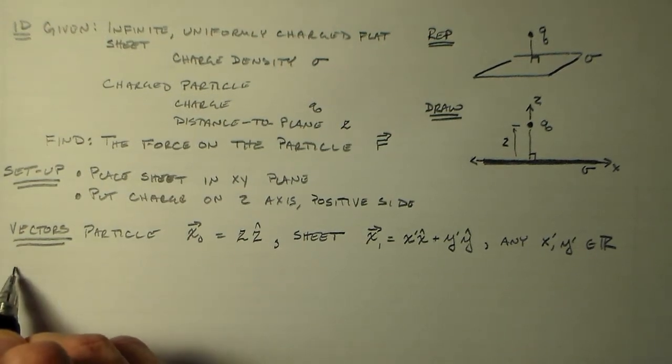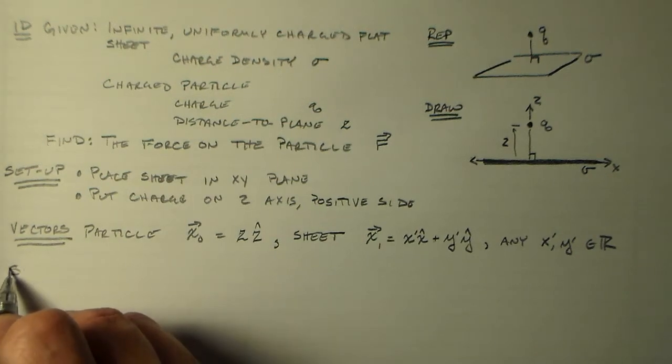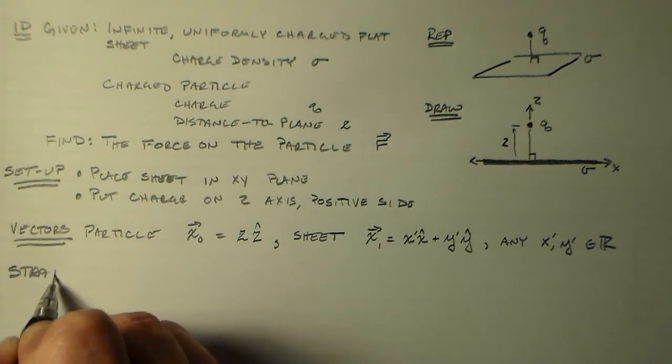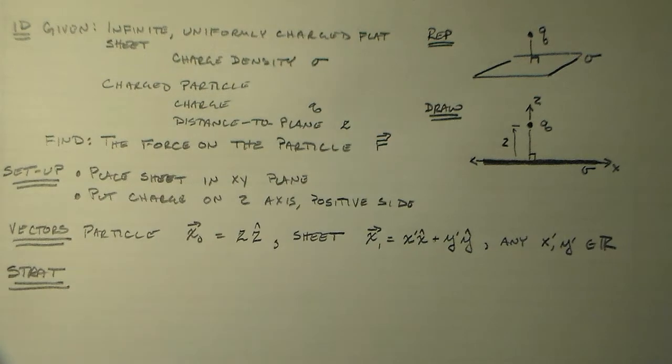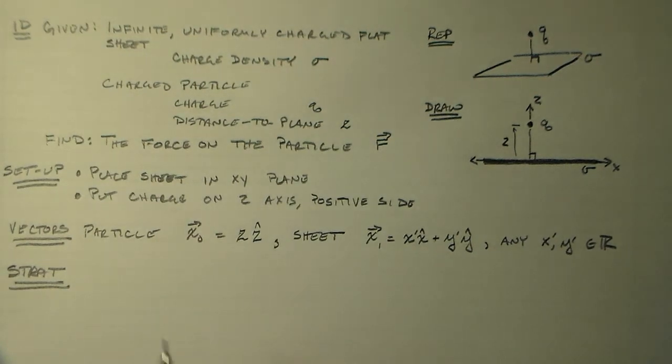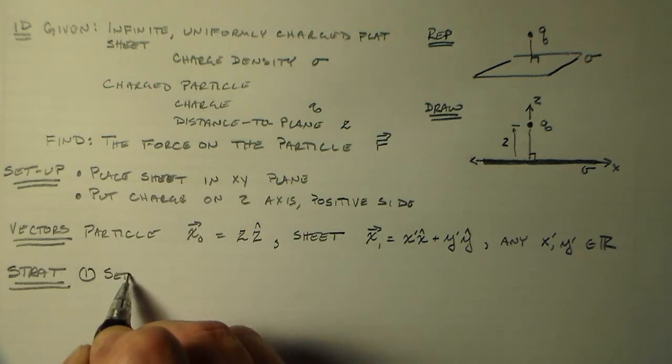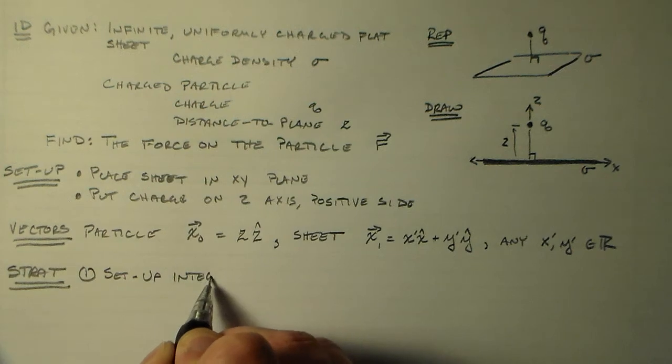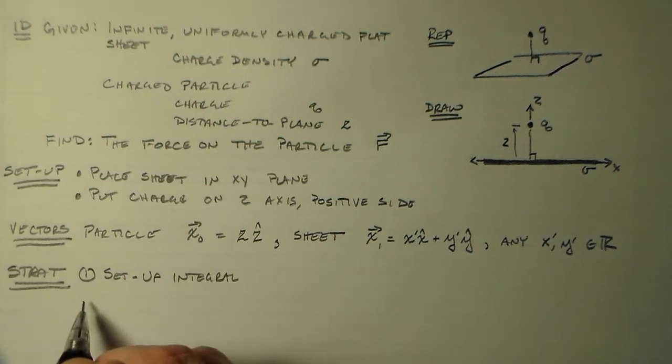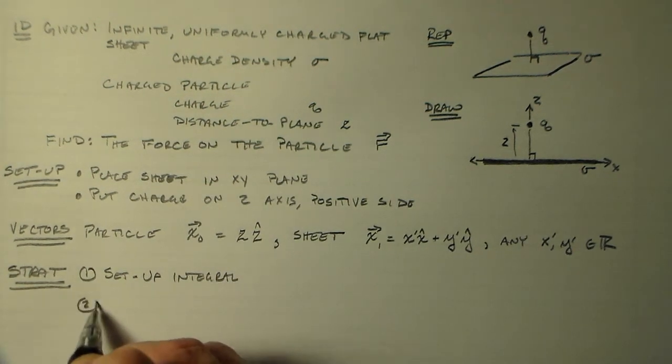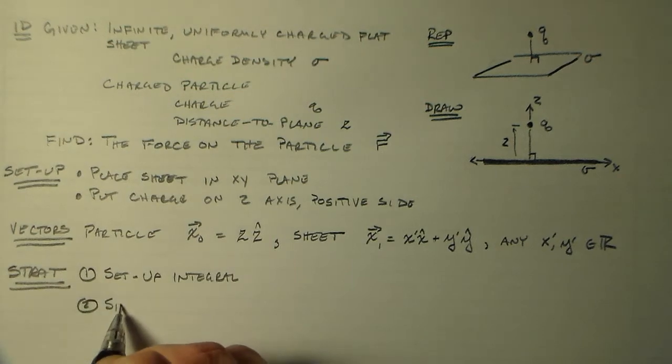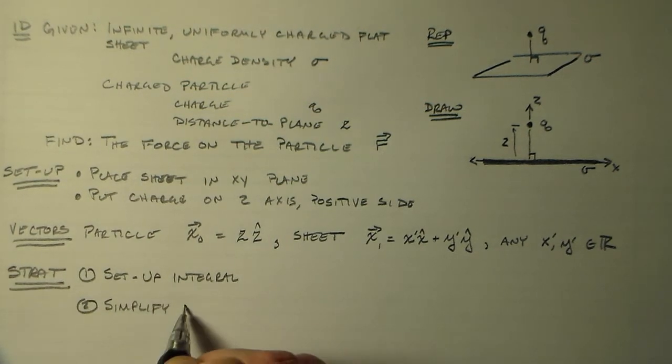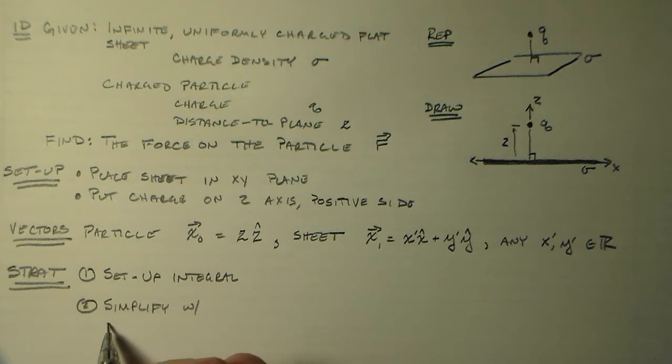So that's what we've got for our vectors. Then we need a strategy, right? How are we going to cope? Now that we know where everything is, how are we going to actually solve the problem? First thing we want to do is set up the integral. That's always good for business. Two, we want to simplify. Simplify it with symmetry. We'll use some different symmetry conditions.